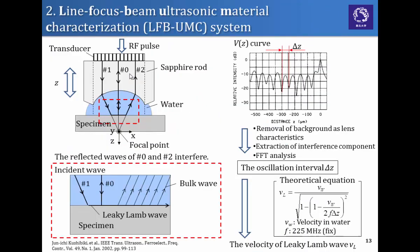Next, let me introduce the LFB-UMC system briefly. The incident waves S1 and S0 are generated from the transducers and propagate through the sapphire rods and water. It converts the wave at the surface of the specimen and it propagates on the boundaries of the leaky wave while emitting some energy into the water. The emitting energy returns to the sapphire rod through S2. So S0 and S2 interfere by changing the distance between sapphire rods and specimen to obtain this V(Z) curve. By removing the background of the lens capacities and extraction of the interference components and FFT analysis, the oscillation interval delta Z can be obtained. And finally, we measure the velocity of the leaky wave from these theoretical equations.